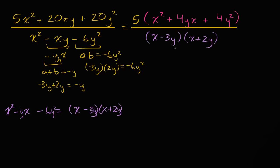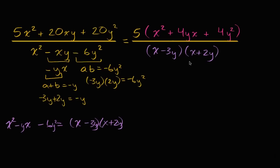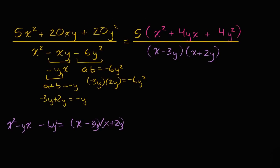And nothing seems to simplify out just yet, but it looks like what we have in magenta here could be simplified further. And we're gonna do a very similar exercise to what we did just now. What two expressions, if I multiply them, I get four y squared. And if I add them, I get four y. It looks like two y would do the trick.